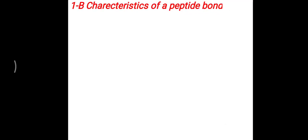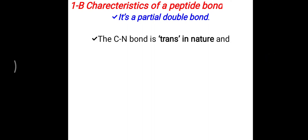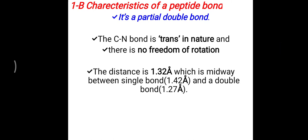In the primary structure, you must remember the characteristics of the peptide bond. First, it is a partial double bond. Second, the carbon-nitrogen bond (C-O-N-H bond) in this peptide bond is trans in nature, and there is no freedom of rotation between the carbon and nitrogen bond of the peptide. The distance between the C-O-N-H group is 1.32 Å, which is midway between a single bond (1.42 Å) and a double bond (1.27 Å), making it a partial double bond.